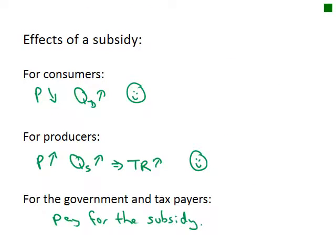The effects of the subsidy: for consumers, price went down and quantity demanded went up, so they're better off. For producers, their price received went up because they get additional money from the government, and quantity supplied went up, so total revenue increased — they're happy. So far it sounds absolutely ideal. But for the government and taxpayer, they have to pay for the subsidies.